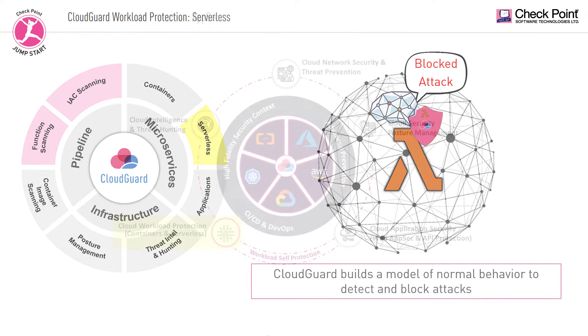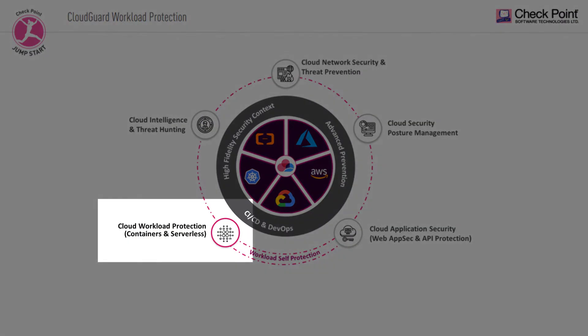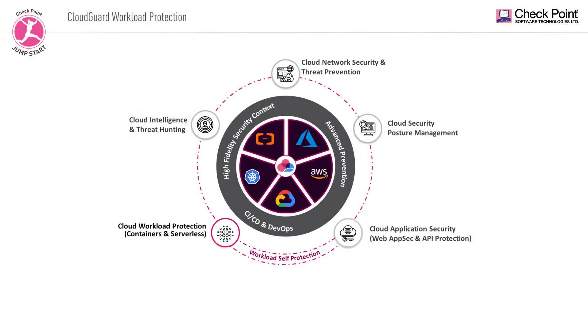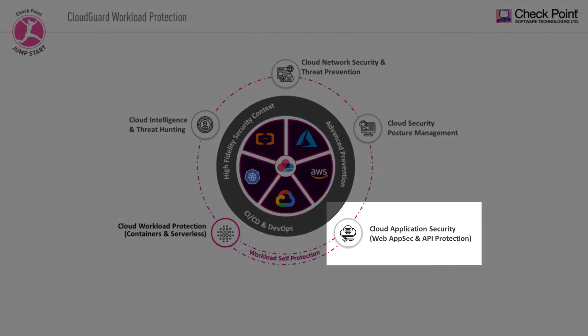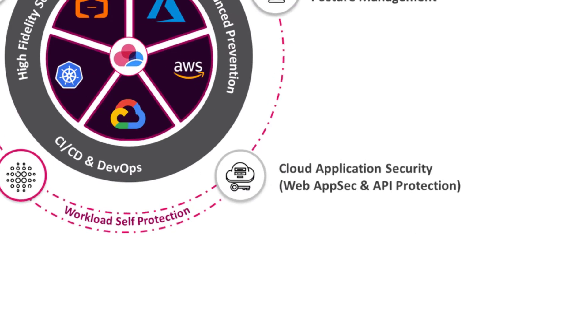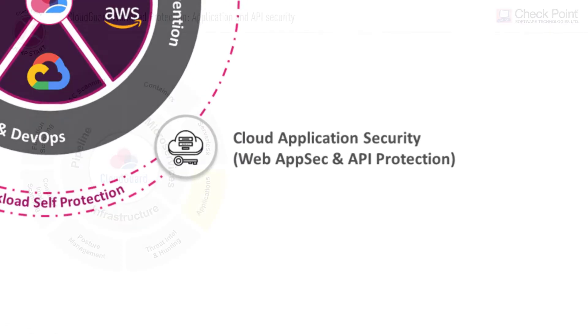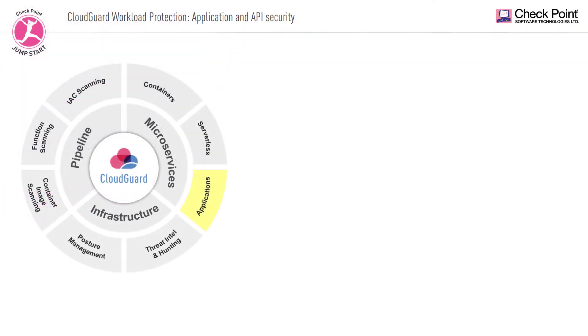Up to this point, we've covered the security threats cloud workloads face and how CloudGuard can help protect against them. But what about the applications themselves? What about the APIs used to interact with cloud resources and services? How do we protect these elements? First, let's take a moment and talk about the threats we face in these areas.